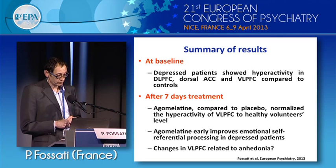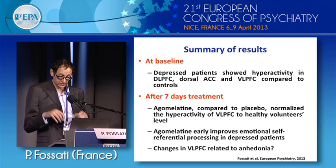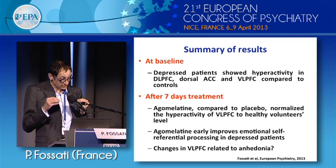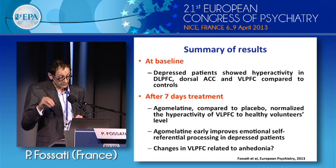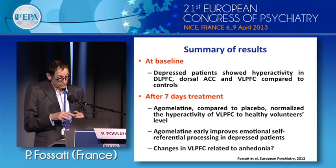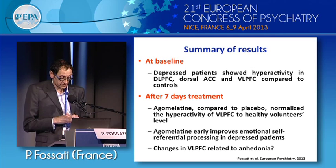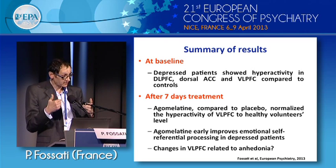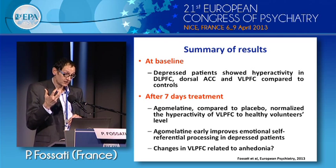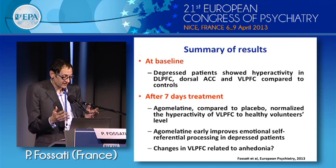To summarize these results: depressed patients showed hyperactivity in the dorsolateral, dorsal cingulate, and ventrolateral prefrontal cortex compared to controls. After seven days, agomelatine normalized the abnormal brain pattern of ventrolateral prefrontal cortex activity to the level of healthy volunteers. This increased activity at baseline may reflect abnormal excessive cognitive control of emotion. We also observed that agomelatine improves emotional self-referential processing, especially for positive pictures. One question is whether this is related to anhedonia, since some studies show that impaired VLPFC activity can induce a decrease in positive affect. We did not have an anhedonia scale, but we believe this change may be related to an anti-anhedonia effect of agomelatine.